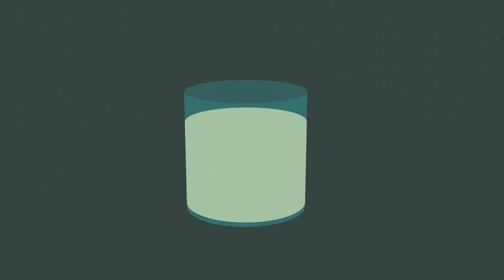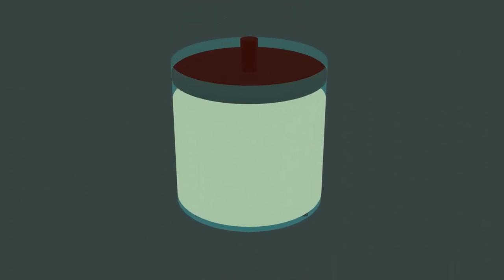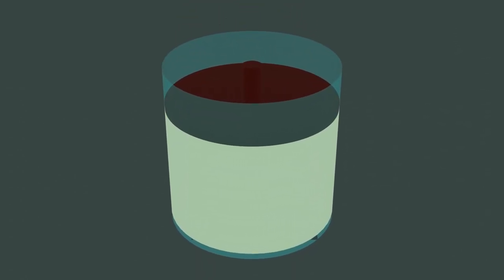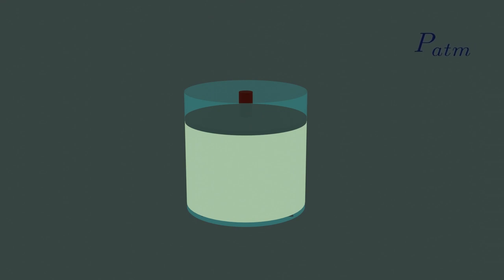Now, what if we make this a piston cylinder assembly? Then there will be two pressures. One pressure exerted by atmosphere and the other is the pressure exerted by the piston. So the total pressure is atmospheric and piston pressure.